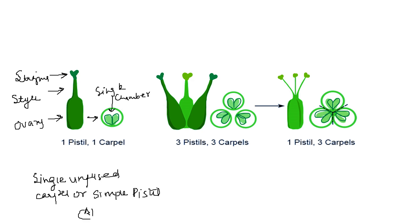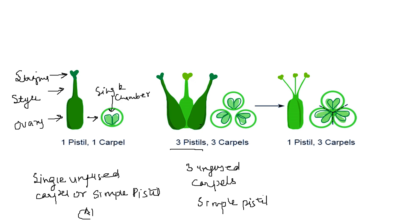Now we see another example. In this picture there are multiple unfused carpels. As I have already told you, the stigma, style, and ovary together constitute a carpel, so here we have three unfused carpels — multiple unfused carpels — with a simple pistil because they are not fused with each other. When we do a cross-section of the ovary we see there are separate chambers, each carrying ovules from each individual carpel.